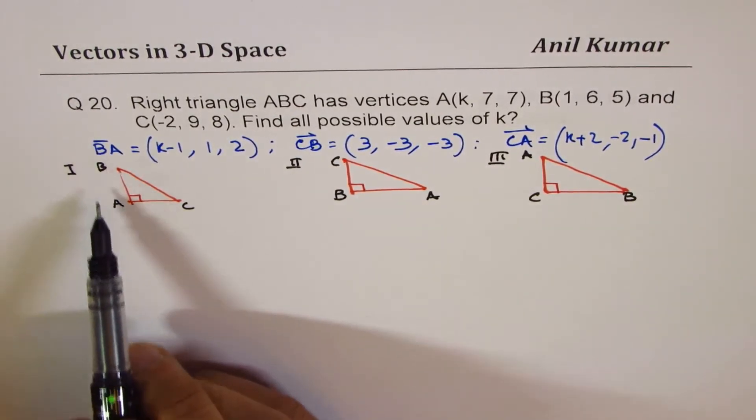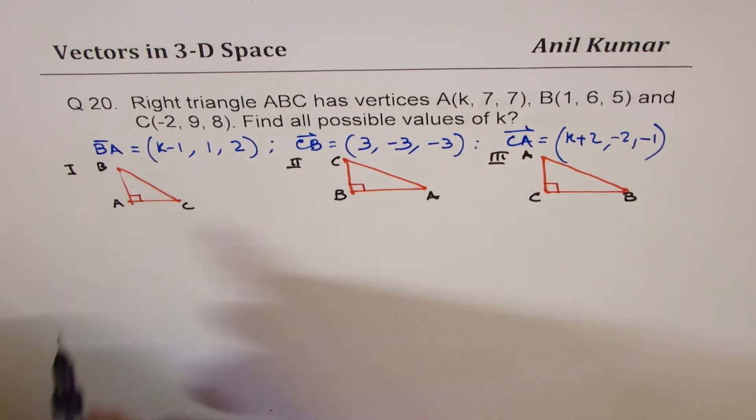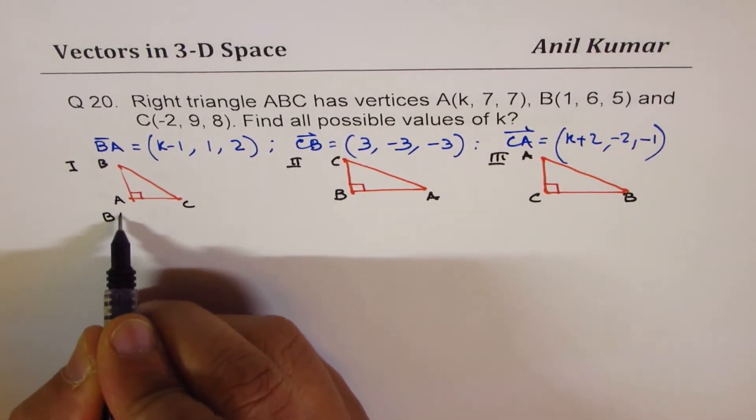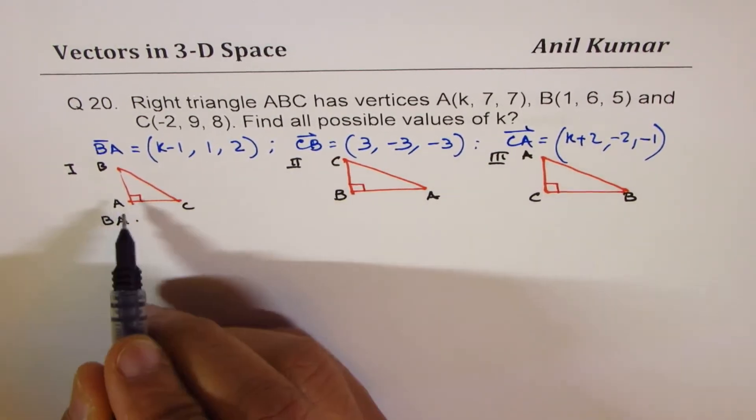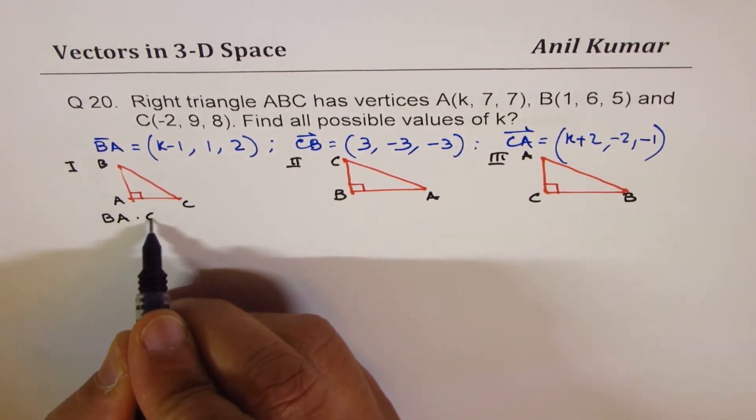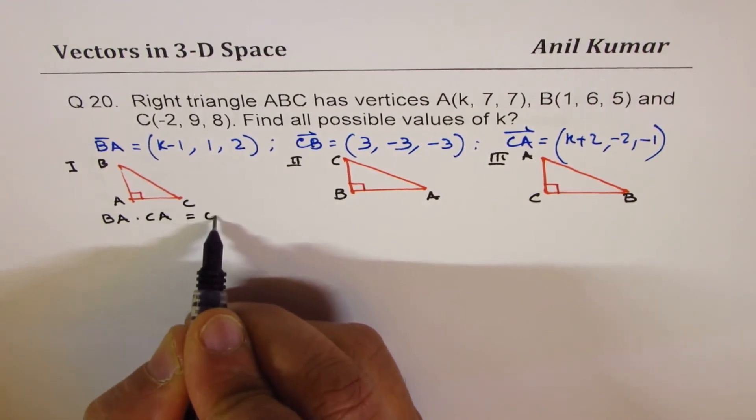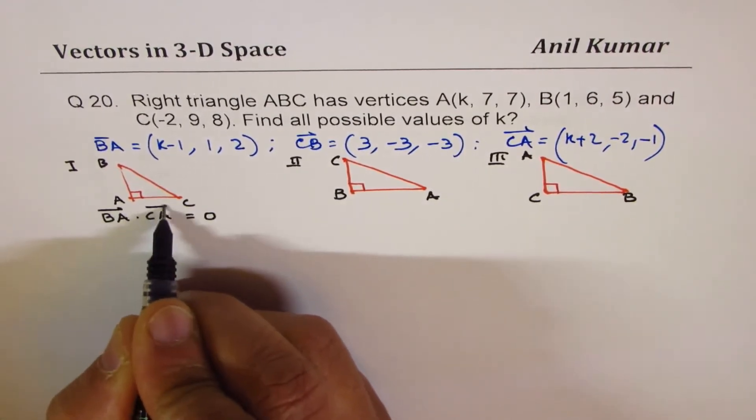Now when you are working with case 1, in that case BA dot this side which I am saying A to C or CA, whatever, should be equal to 0. Does it make sense to you?